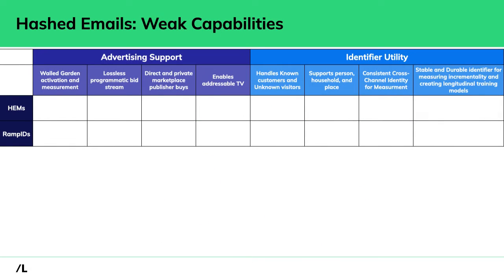HEMs and RampIDs both clearly support walled gardens for activation and measurement. Many folks don't know that in Google ADH for measurement, it's not just HEMs — RampIDs are supported. With Facebook, it's not just HEMs — RampIDs are supported too, and a lot of that is not widely publicized. It was a necessity that walled gardens supported those additional inputs because most brand clients weren't comfortable sharing hashed emails with large publishers. RampID is also fully supported throughout the programmatic bid stream — brand DSP to SSP is another HEM match, SSP to publisher, and so on — and our ecosystem of publishers, DSPs, and SSPs supports RampID with lossless matches as it progresses through the bid stream.